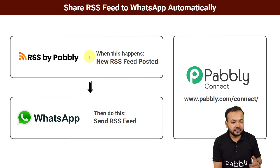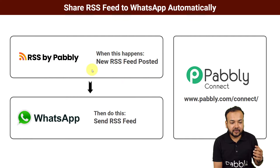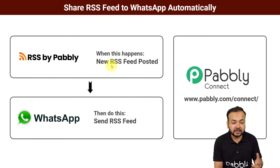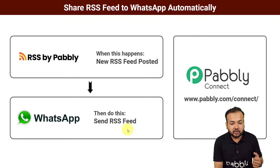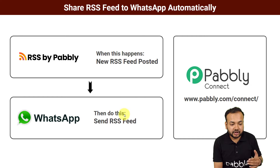This will be the flow of this automation. Here we are using the RSS by Pabbly feature of the Pabbly Connect application. With the help of this, whenever a new RSS feed is posted on any website, the same RSS feed is going to be delivered on a WhatsApp account as a message automatically. We are using Pabbly Connect, which is an integration and automation tool, to set up this automation.